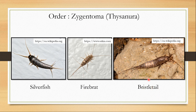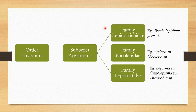The word bristletail is also used for some other insects, but here these insects will be known as bristletails and placed under order Zygentoma. Earlier, Zygentoma was a suborder under order Thysanura, which was under subclass Apterygota, but now only order Zygentoma is used.